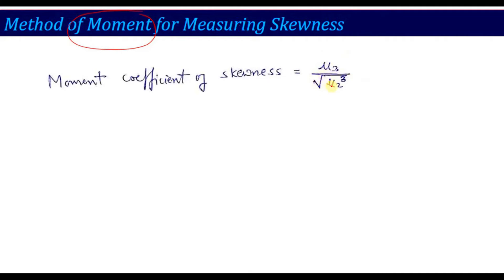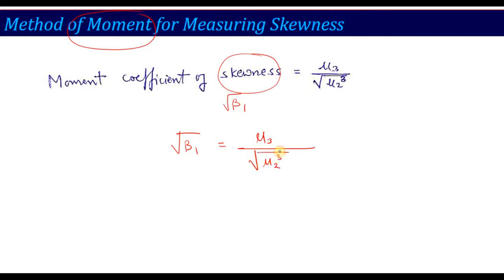The second method depends on moments. Using the central moments we have studied, we can calculate the skewness coefficient when the moments are known. The formula is: √β₁ = μ₃ / √(μ₂³). So to calculate skewness, I need the second central moment (μ₂) and the third central moment (μ₃). This is why moment calculation is very important.